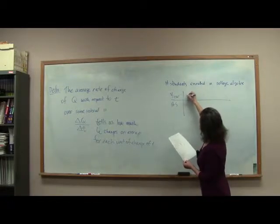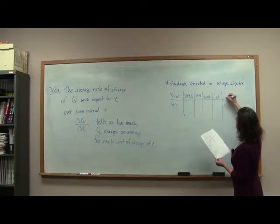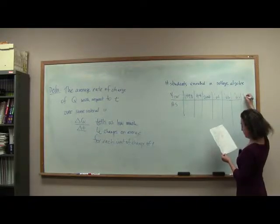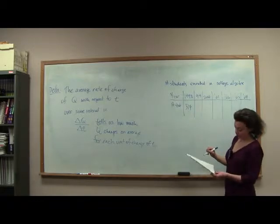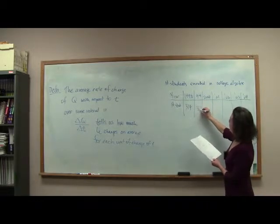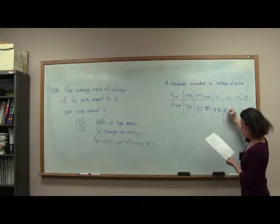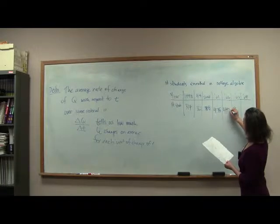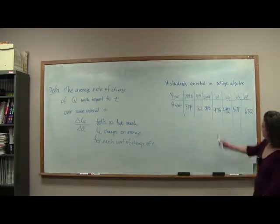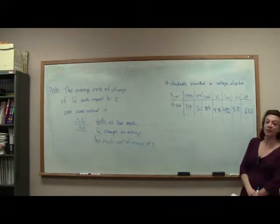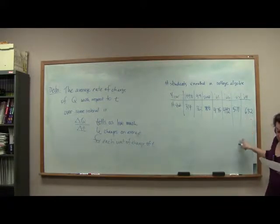We've got year and then the number of students. Let's start out in the 90s: 98, 99, 2000, 2001, 2002, 2003, and 2004. What this is saying is in the year 2001, there were 435 students enrolled in college algebra, whereas in 2004, there were 632 students in college algebra.